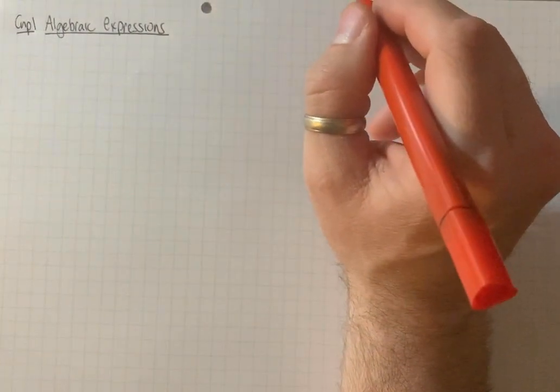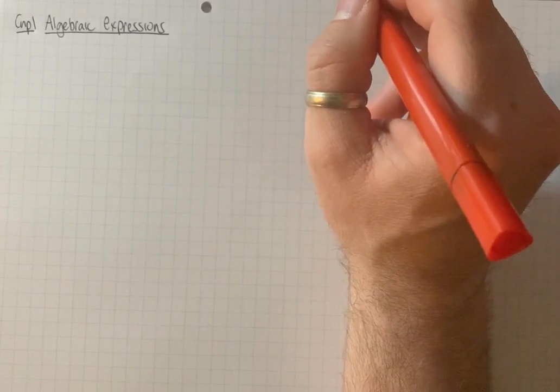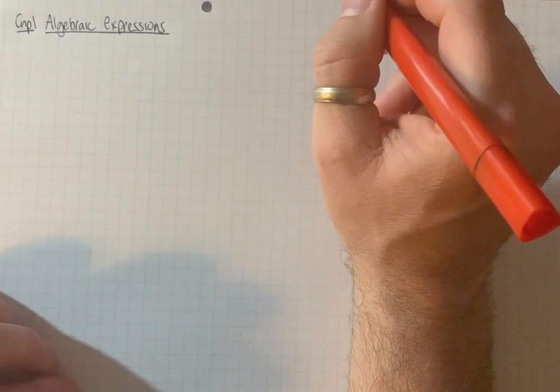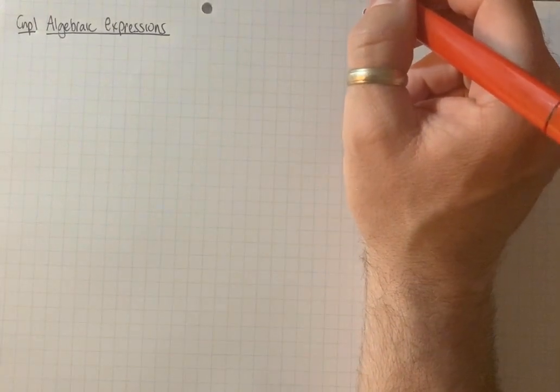The first chapter of the Year One Pure course is on Algebraic Expressions and it's really all stuff you should know from GCSE, so it's a quick reminder of a lot of things you might have forgotten.